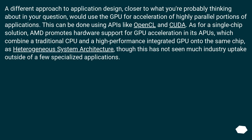A different approach to application design, closer to what you're probably thinking about, would use the GPU for acceleration of highly parallel portions of applications. This can be done using APIs like OpenCL and CUDA. As for a single-chip solution, AMD promotes hardware support for GPU acceleration in its APUs, which combine a traditional CPU and a high-performance integrated GPU onto the same chip — known as Heterogeneous System Architecture — though this has not seen much industry uptake outside of a few specialized applications.